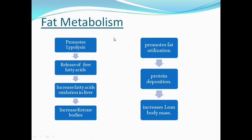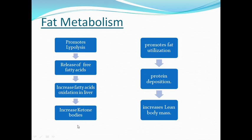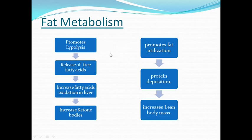Now, fat metabolism. Growth hormone promotes lipolysis — it increases the lysis of fat — releasing free fatty acids in the body and increasing free fatty acid oxidation inside the liver. Because of oxidation of fatty acids inside the liver, there is generation of ketone bodies, causing a ketogenic effect. Due to increased lipolysis, it promotes fat utilization, spares protein, and causes protein deposition. Because of that there is increase in body mass, but this body mass is increased as lean body mass, not fat body mass.